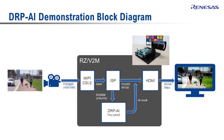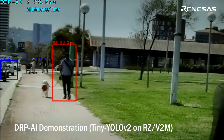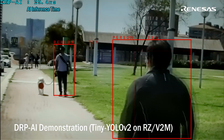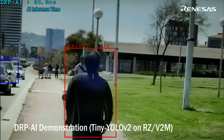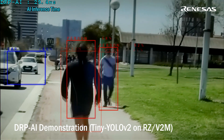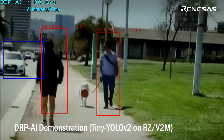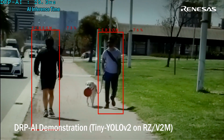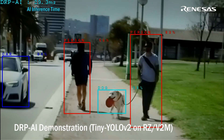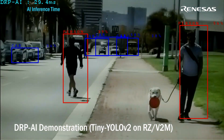DRP-AI processes the Tiny YOLOv2 model with an input image size of 416 by 416 in RGB format. In the following demo, the Tiny YOLOv2 model is running on DRP-AI in less than 30 milliseconds, shown in the top left corner for each frame. This neural network can distinguish 20 types of objects.